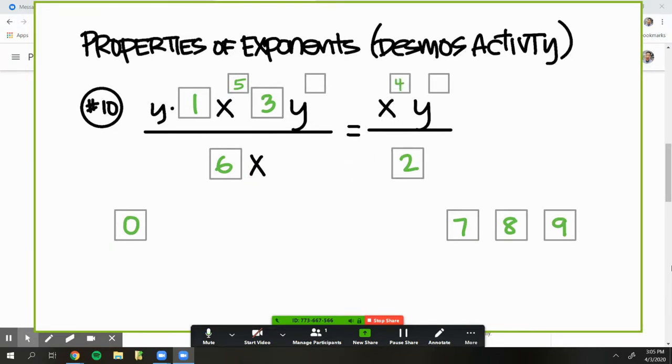I've got y times y to the something. So again, similar to the quotient property, we've got the product property. In this case, you've got a y, a single y, times a y to the something. We're going to wind up using consecutive numbers again. It's not really going to matter which ones you use. Let's use 7 and 8.